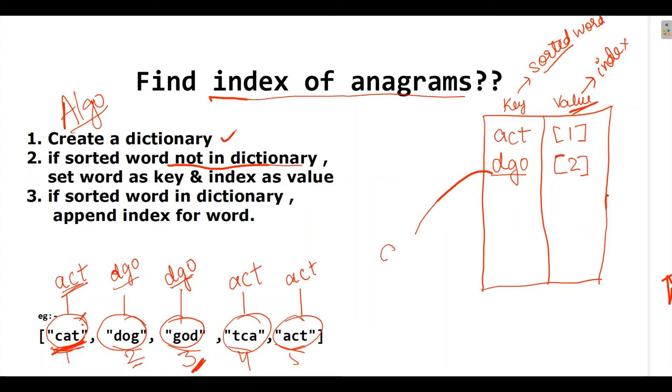2 is already there but I want this 3 to be appended in this dictionary of DGO. So, here 3 will be appended and then we will keep the value in the dictionary. So, now we have 2, 3 for DGO.